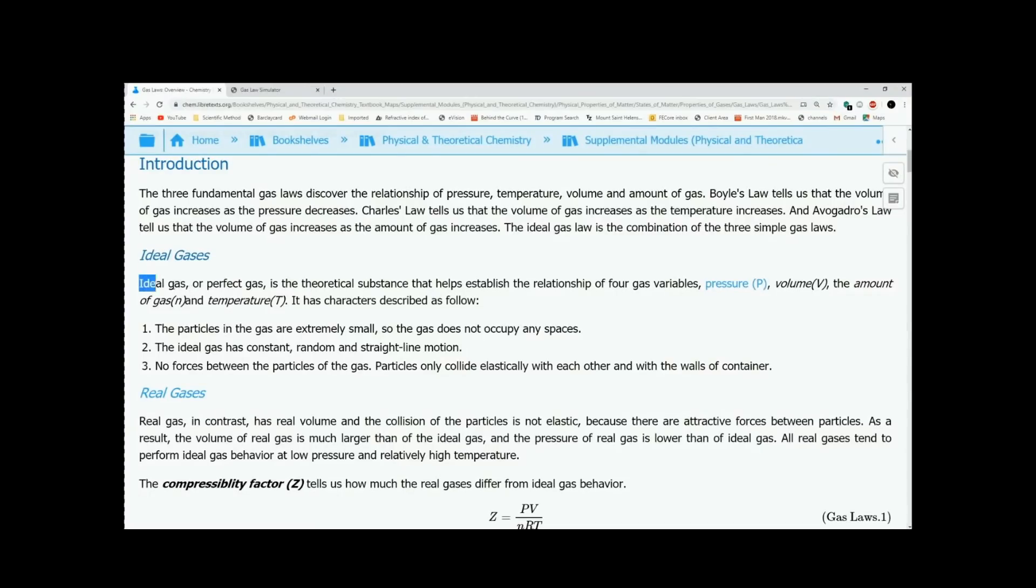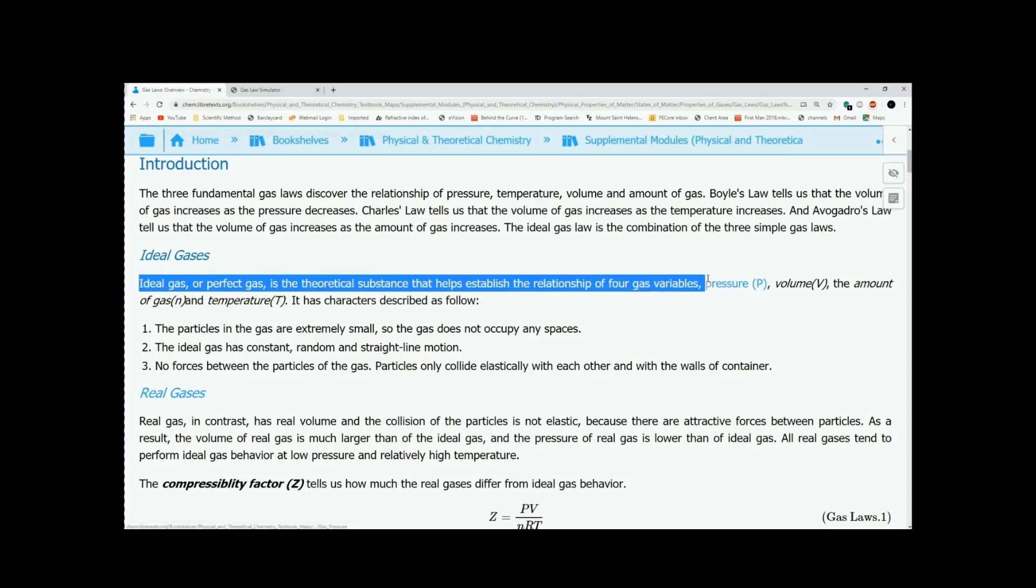So let's have a look. It says the ideal gases. The ideal gas or perfect gas is the theoretical substance that helps establish the relationship of four gas variables. Pressure, volume, the amount of gas, and the temperature. So it's PVNT, right? It's the relationship between pressure, volume, gas, and temperature.